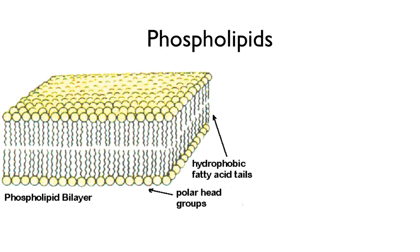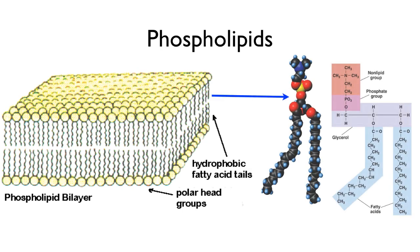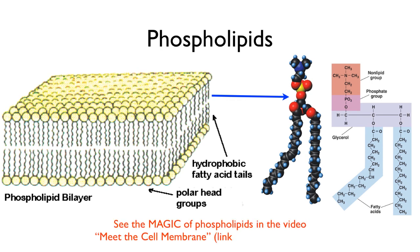The first group of lipids I want to mention briefly are the phospholipids. These are the components of cell membranes. They're made of a backbone of glycerol, two fatty acid tails, a phosphate group, and then a side chain. I'm mentioning them briefly because I have an entire video on this — if you watch 'Meet the Cell Membrane,' I talk about the magic of phospholipids. There's a link in the description box below.